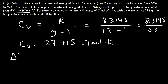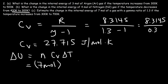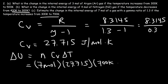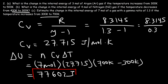Now we use the same formula: delta U equals N times Cv times delta T. We have 7 moles, Cv is 27.715, and the change in temperature is 700 minus 300, which is 400 Kelvin. So it's 400 times 27.715 times 7, which works out to 77,602 joules. That is the change in internal energy of the system.